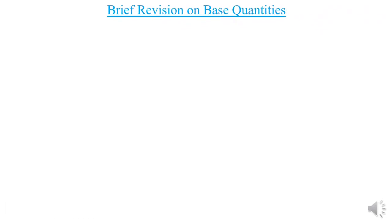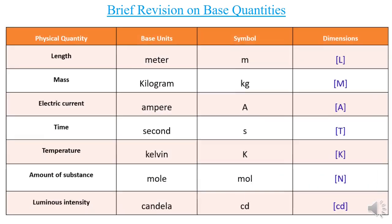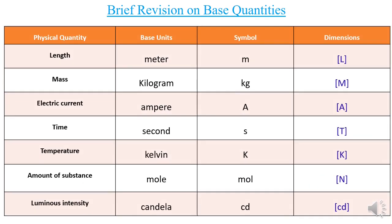Let's have a quick revision on base quantities. Here is the table showing physical quantity, base unit, symbol, and dimensions. For length, its base unit is the metre, its symbol is little m, and its dimensions are capital L. For mass, its base unit is the kilogram, its symbol is little kg, and its dimensions are capital M.